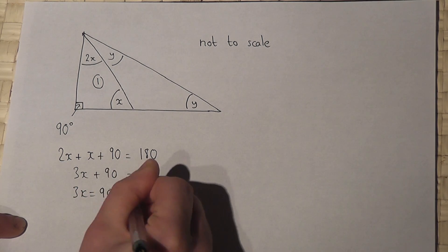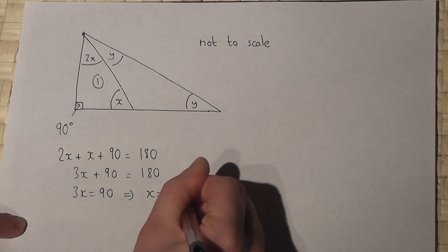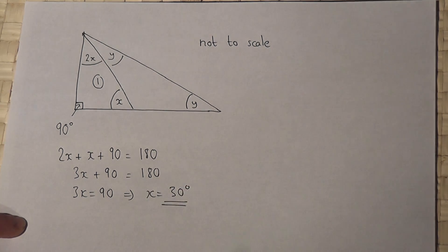If I subtract 90, I get 3x equals 90, so therefore x just equals 30 degrees. So I found the value of x to be 30 degrees.